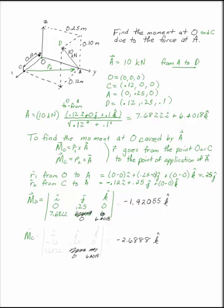And the moment at C is very similar but has a different value for R. That's going to be negative .12, .250, and the same value for A. We can take those cross products and get the moment.